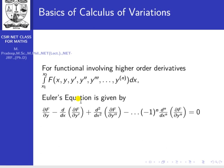For functions involving higher-order derivatives — such as y, y', y'', y''', up to y^(n) — the Euler equation reduces to: ∂f/∂y − d/dx(∂f/∂y') + d²/dx²(∂f/∂y'') − ... + (−1)^n · d^n/dx^n(∂f/∂y^(n)) = 0.